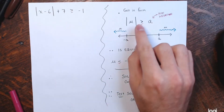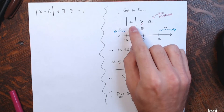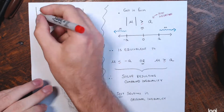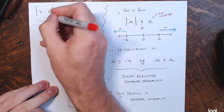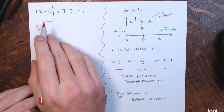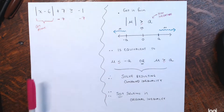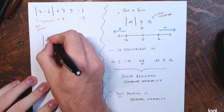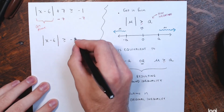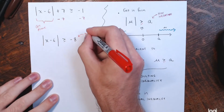These are the steps for every absolute value inequality of this type — but only when the number on the other side after isolating is not negative. Now here's what happens when the number is negative. My first step is to get the absolute value expression alone. Here I have the absolute value of x minus 6, and I want to get that alone. I need to subtract 7 from both sides: minus 7, minus 7. So now on the left I have the absolute value of x minus 6, and on the right it's greater than or equal to negative 8.